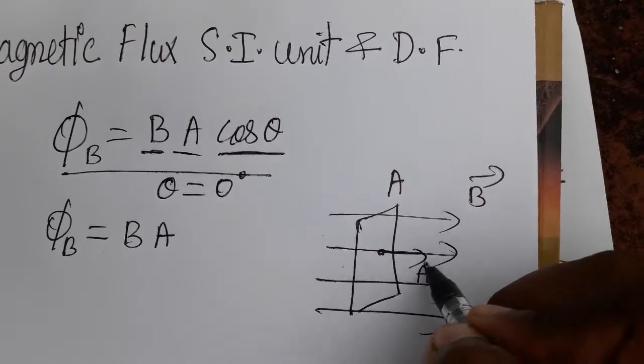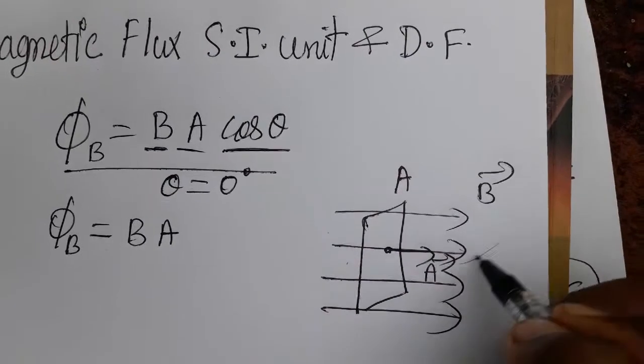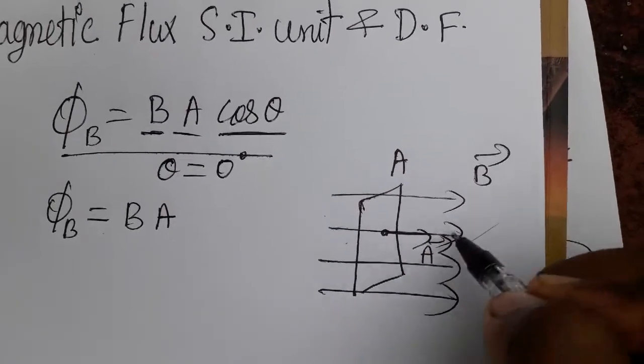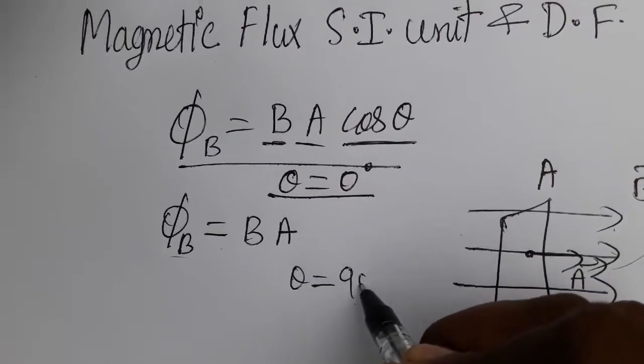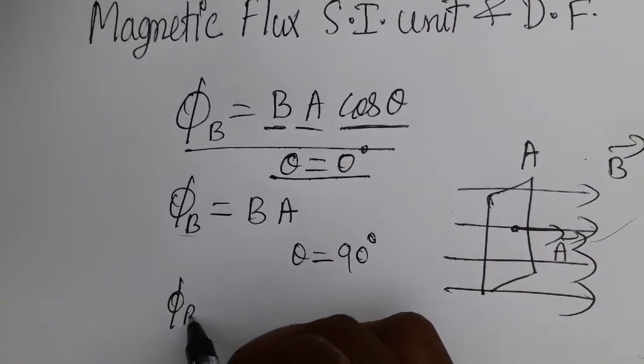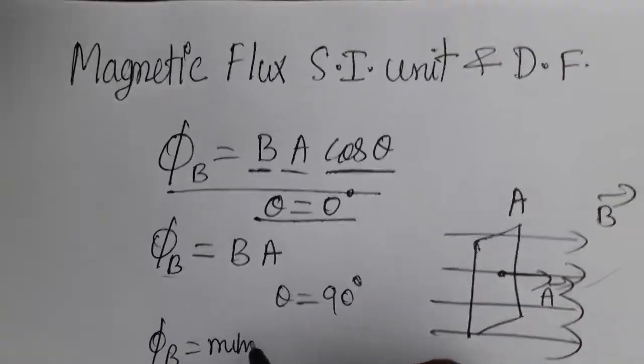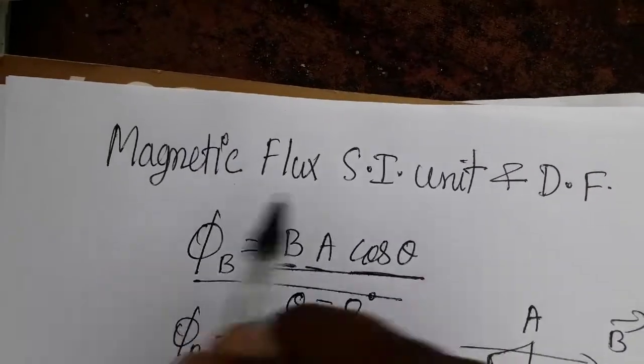When the area vector and magnetic field have the same angle at 0 degrees, the flux will be maximum. When theta is 90 degrees, the magnetic flux will be minimum. Today we are going to learn the SI unit and dimensional formula for magnetic flux.